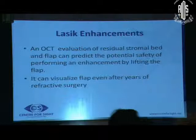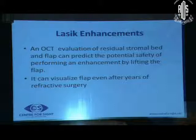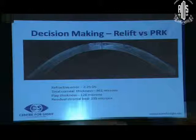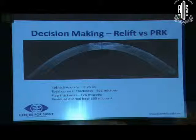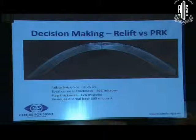Anterior segment OCT is also helpful in planning LASIK enhancements, as it can visualize the flap even after years of surgery. This patient had minus 2.25 diopters of refractive error 8 years after primary LASIK and wanted a re-correction. OCT measured the total corneal thickness at 461 microns, with a flap thickness of 126 microns, leaving a residual stromal bed of 335 microns. So we could safely proceed with enhancement by re-lifting the LASIK flap rather than doing PRK.